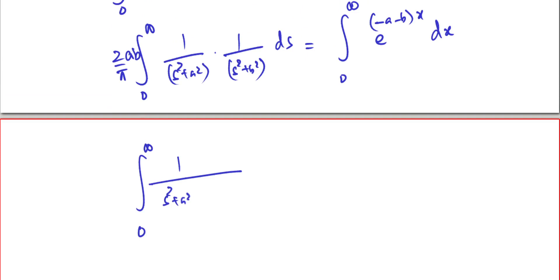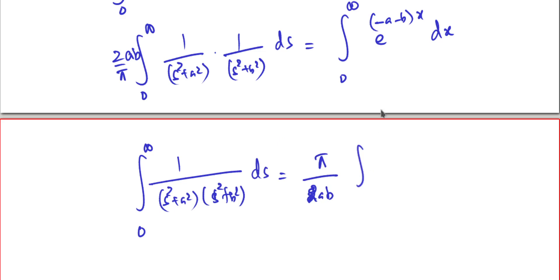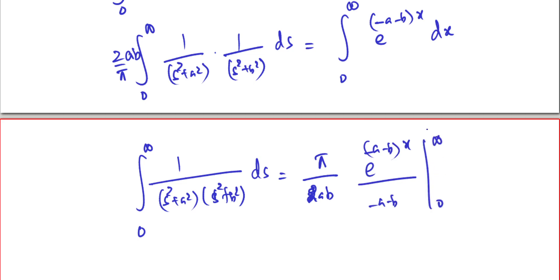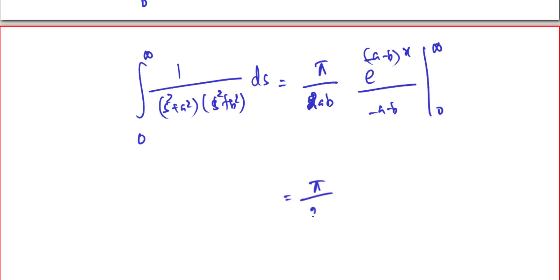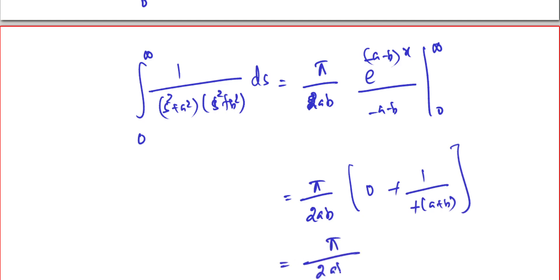Therefore, the integral from 0 to infinity of 1/(s² + a²)(s² + b²) ds equals (π/(2ab)) times the integral from 0 to infinity of e^(−(a+b)x) dx. Evaluating the right-hand side: the integral of e^(−(a+b)x) is e^(−(a+b)x)/(−(a+b)), evaluated from 0 to infinity. The upper limit gives 0 since a and b are both positive; the lower limit gives 1/(a+b). So the result is π/(2ab(a+b)).